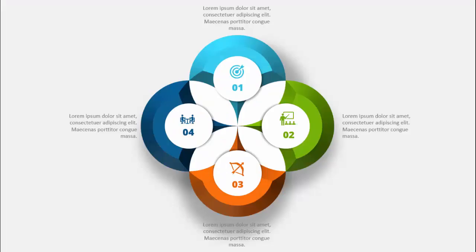In today's tutorial I'm going to show you how to create these four options infographic lighting PowerPoint. I have given it a 3D look, and you can add an icon and an option number. At the top you can add some detailed text with different color combinations for option numbers two, three, and four, and I've added some shadow effect.